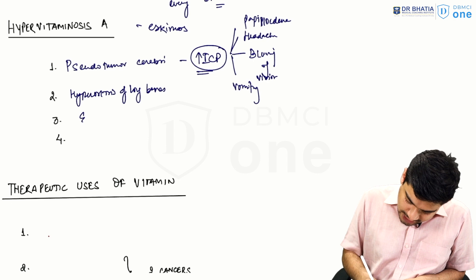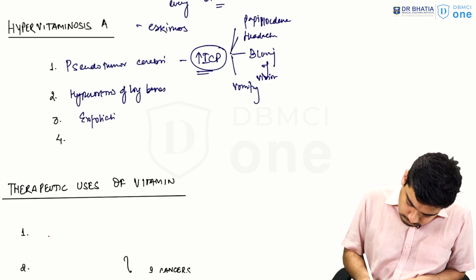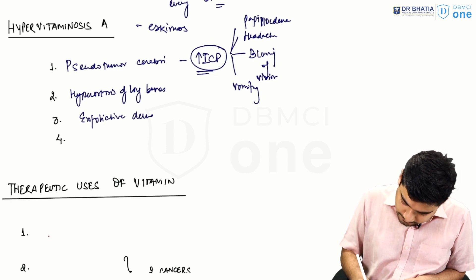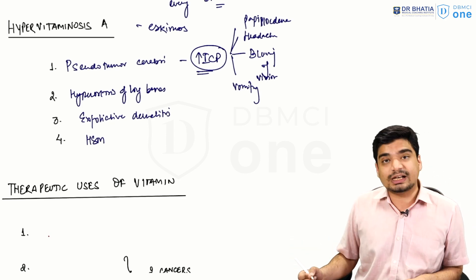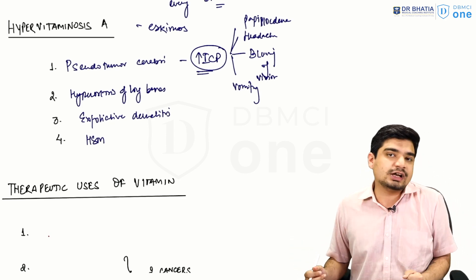Apart from this, these individuals also have exfoliative dermatitis along with hepatosplenomegaly. Obviously, the liver is storing it, so it is becoming enlarged in size.